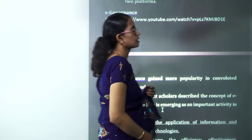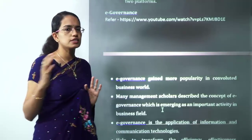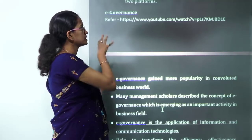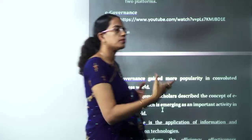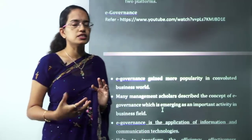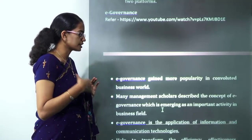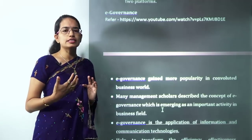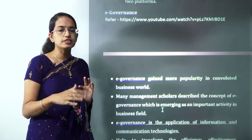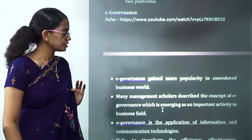E-governance means electronic governance. Governance is based on three motives: accountability, responsibility, and transparency. Bringing in an electronic version streamlines processes — for example, filing property tax or municipality taxes through electronic means. This reduces inbuilt corruption and makes the system more efficient.